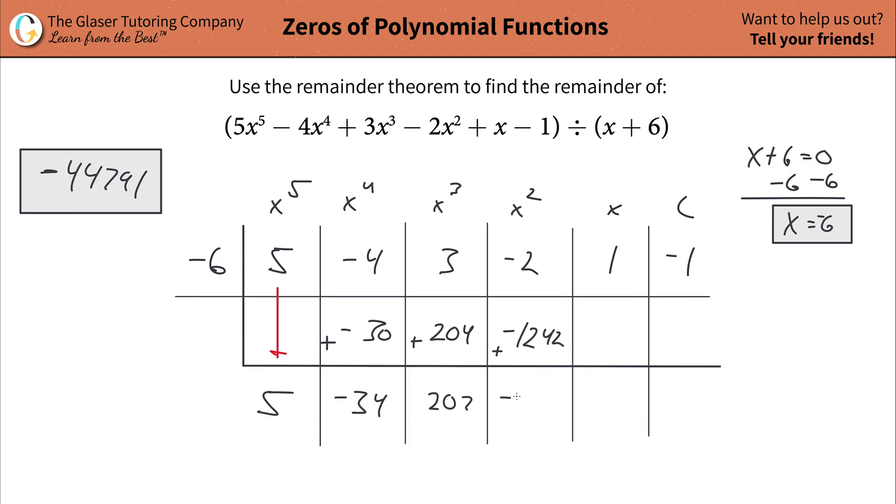Add this up. So that should be negative 1244. Then take the negative 1244, multiply it by negative 6. Oh my goodness. Then that's going to be positive 7464. Add that together. So that's 7465.